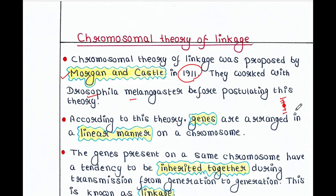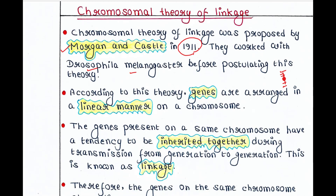The genes present on the same chromosome have a tendency to be inherited together during transmission from generation to generation. This is known as linkage. Suppose chromosome 1 contains genes A, B, C, D, and E. This organism will produce gametes, and male and female gametes unite to form the zygote. That zygote will also get these 5 genes on chromosome number 1.